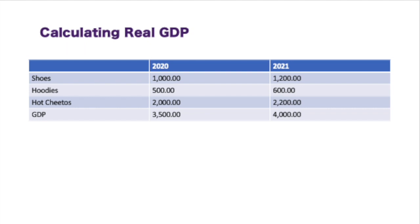Here I'm going to use an example of nominal GDP. Let's say this is a country that only produces shoes, hoodies, and hot Cheetos. In the year 2020, they sell $1,000 worth of shoes, $500 worth of hoodies, and $2,000 worth of hot Cheetos — their GDP is $3,500 for 2020. In 2021, shoes are at $1,200, hoodies at $600, hot Cheetos at $2,200, and the GDP is $4,000. Just by looking at these two numbers, you could assume there is $500 worth of growth from 2020 to 2021.